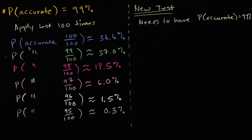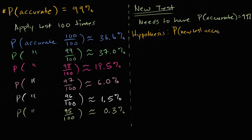You set up a hypothesis — and there are null and alternate hypotheses you'll encounter deeper in statistics, but let's start with a simple one. Your hypothesis is that the probability that your new test is accurate is 99%, because you want that to be true so it gets approved by the appropriate governing body.